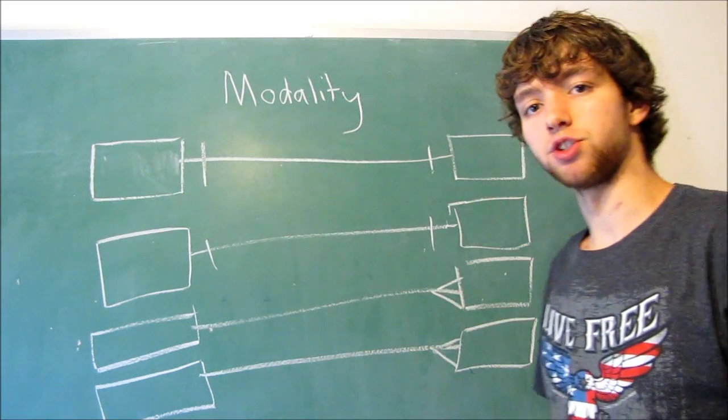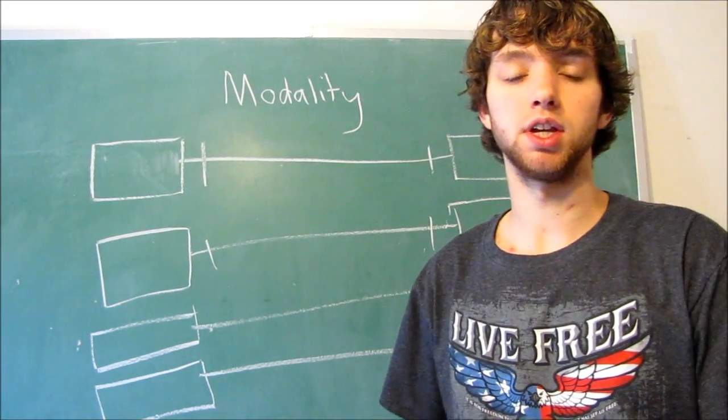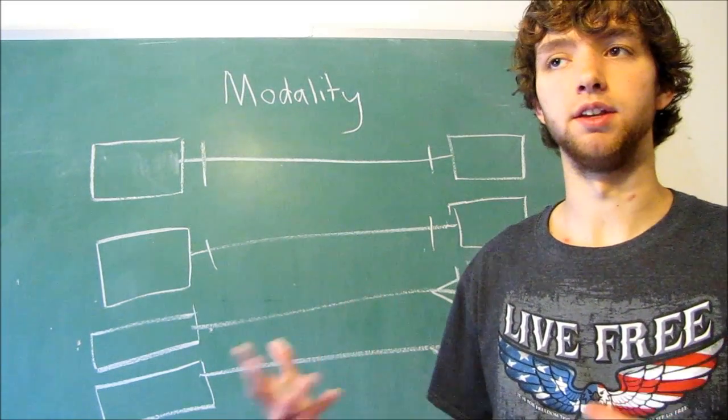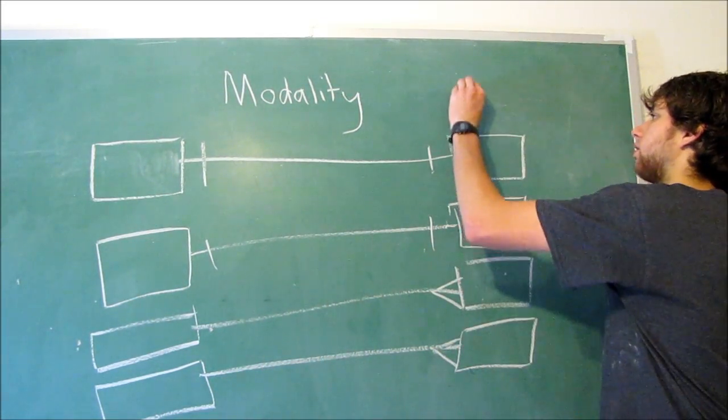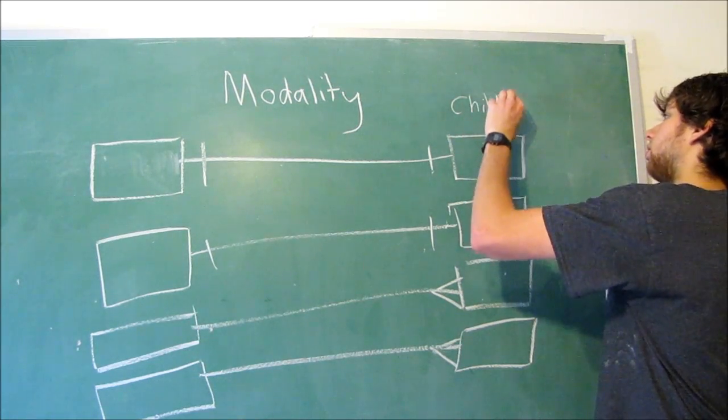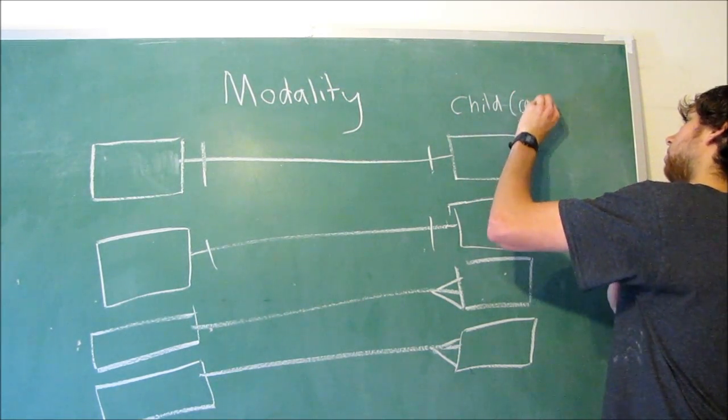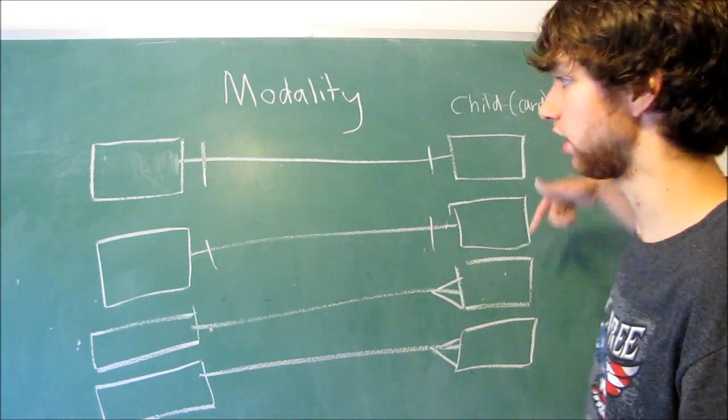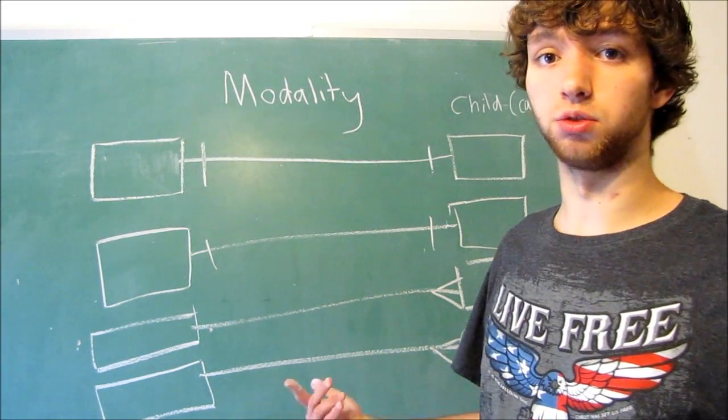So we have the basic relationships. Now we can add one more thing to say if it's nullable or not nullable. Basically, does the child, this is the child, which is the card. We're asking, does the foreign key column have the not null characteristic?